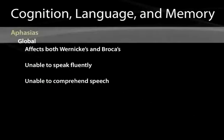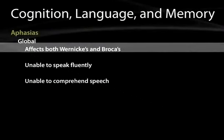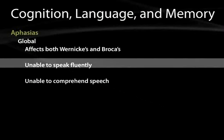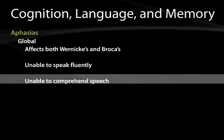A global aphasia is simply a large MCA stroke that may affect both Wernicke's and Broca's areas. These people are unable to speak fluently and are unable to comprehend speech.